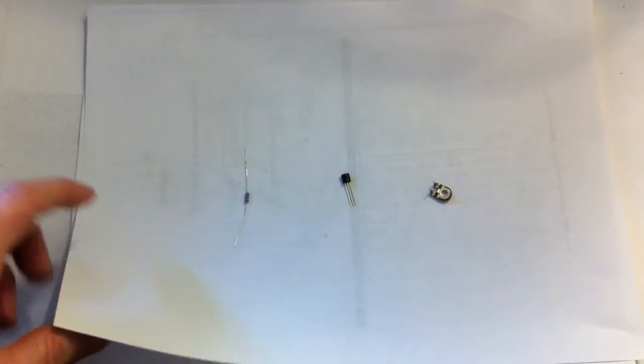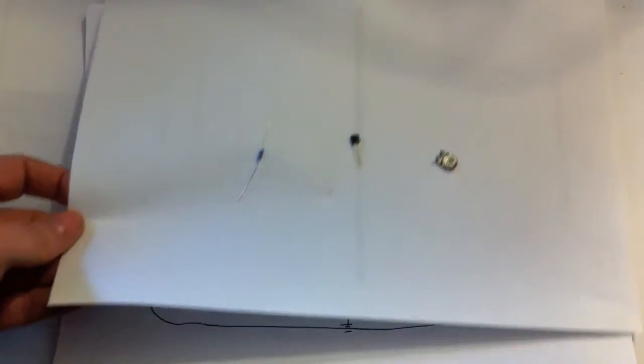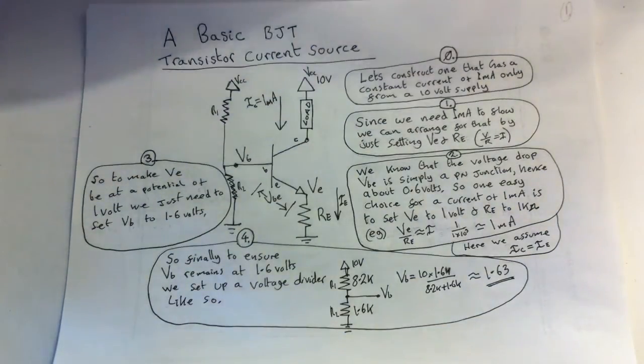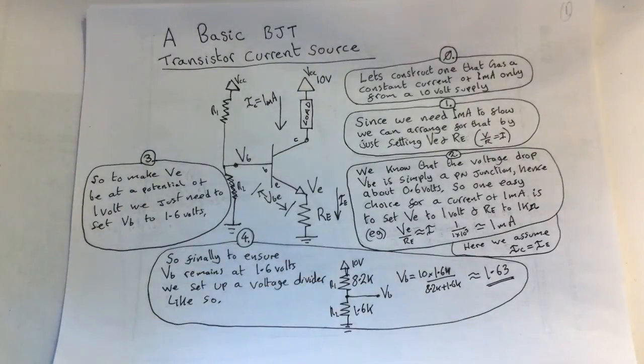What I'll do is read through the notes that I've made to explain a simple current source as we go. At the end, I'm going to show a quick lab using these three components to test the circuit and see if the theory matches the actual laboratory results.